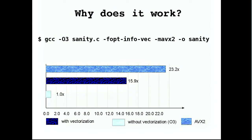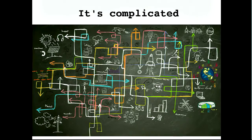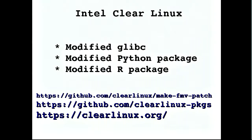This is the floating point multiplication result — you can get even 23 times the performance with AVX2. It's complicated to implement yourself because you have to write assembly code. But Intel started a project called Clear Linux, which has pre-built packages for you. On their GitHub you can download packages for glibc, R, Python, and many others — I think they have 400 or more packages.